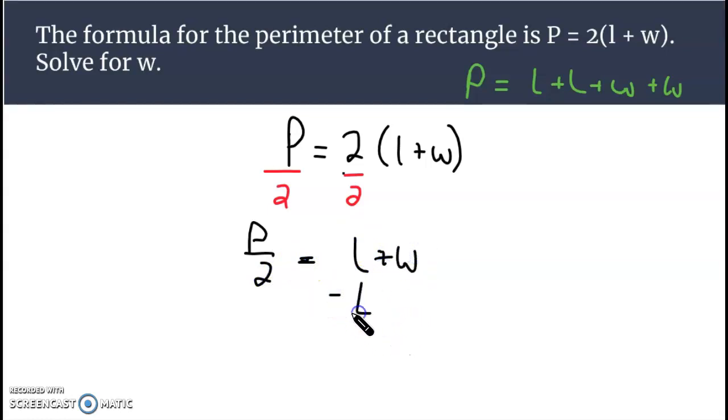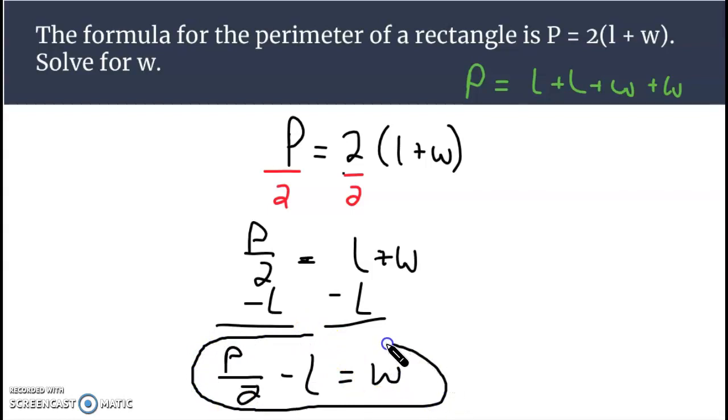I'm going to take away l from both sides, so we have P over 2 minus l, the length of the rectangle, equals w. And notice the w is isolated, it equals the quantity P over 2 minus l.